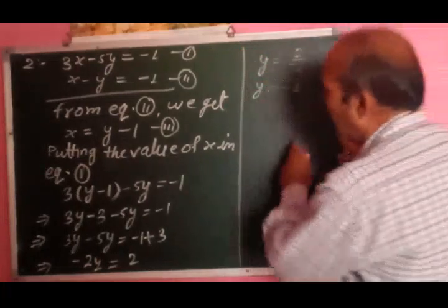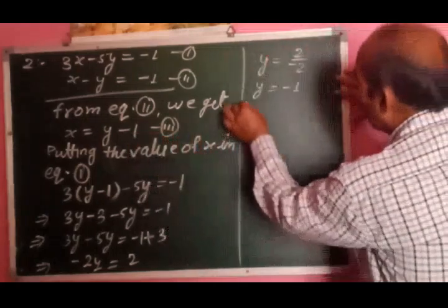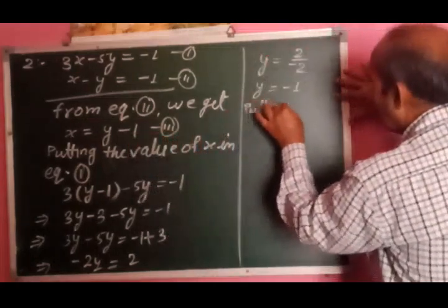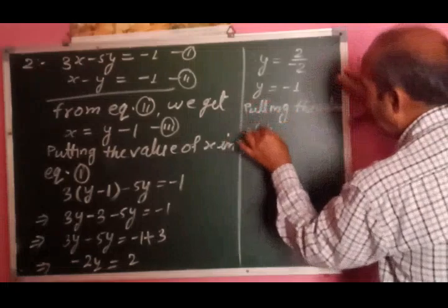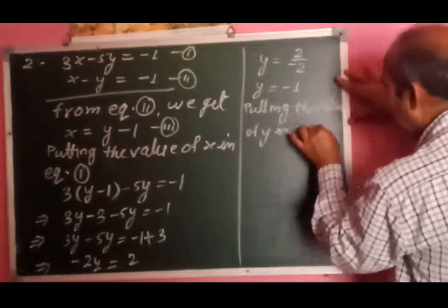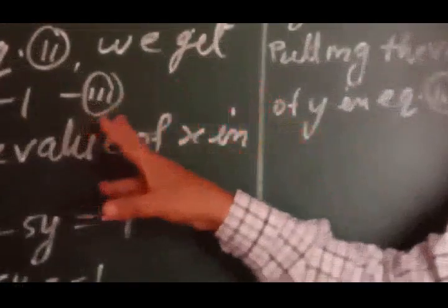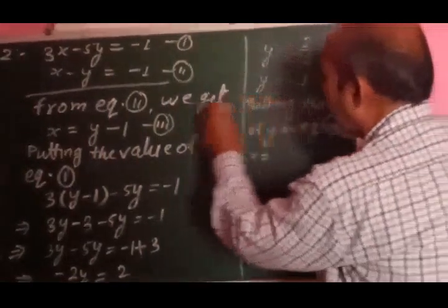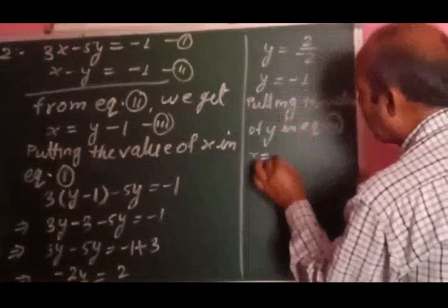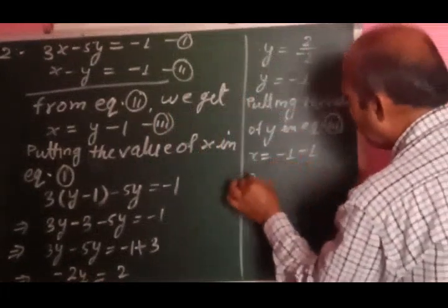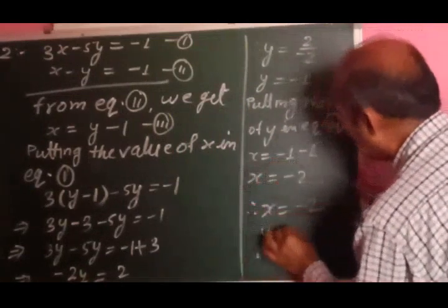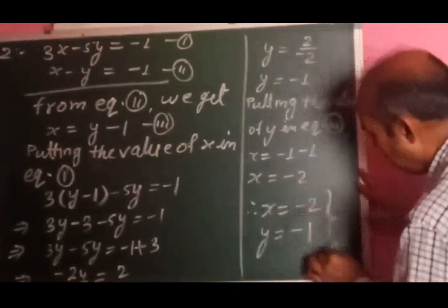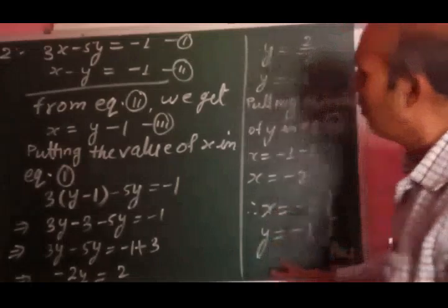Putting the value of y in equation third: y = -1 रखने पर x = y - 1 = -1 - 1 = -2. Therefore x = -2 और y = -1. यह आपको answer प्राप्त हुआ x और y की value.